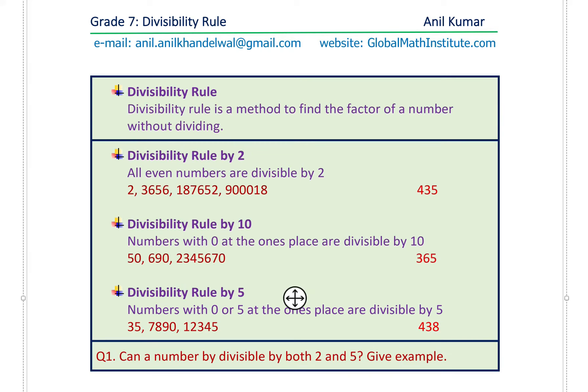When I say divisibility rule, it really means you should be in a position to figure out whether a number is divisible by another number or not without actually dividing. That is important. So a divisibility rule is a method to find a factor of a number without dividing. When you multiply two numbers you get a product — those two numbers are called the factors. This is especially handy when you have very big numbers.